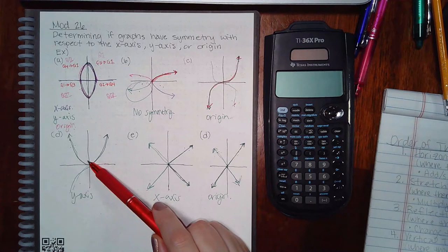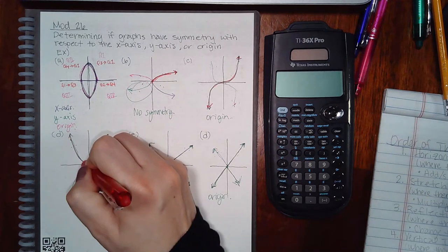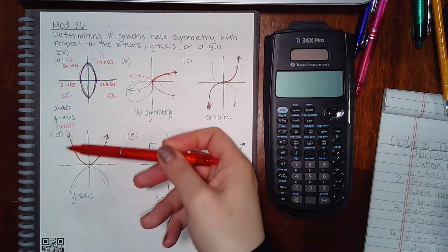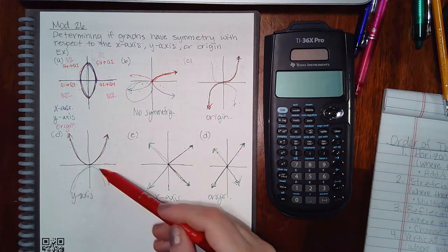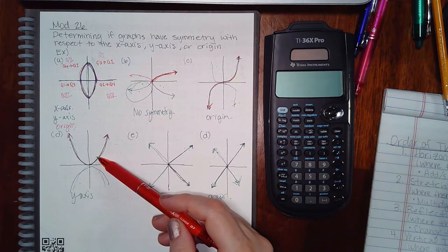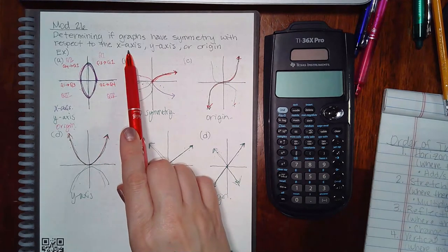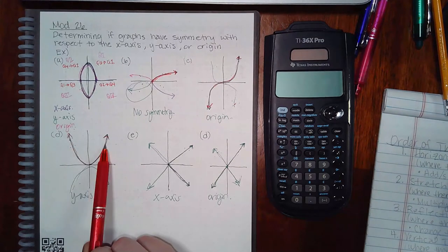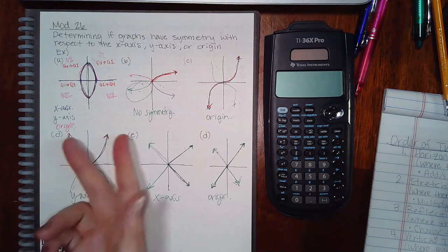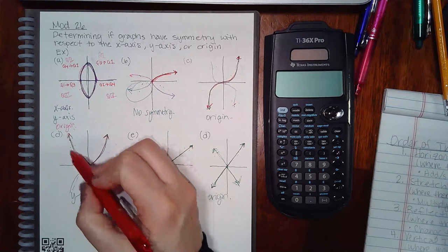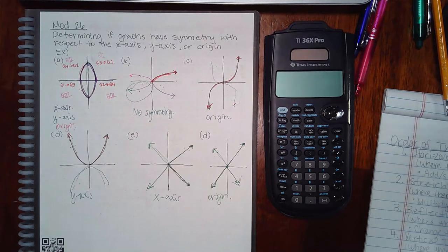For this parabola, this was the original graph. If I flip it over the x-axis it ends up becoming a downward curve, which does not land on the original graph, so it does not have symmetry with respect to the x-axis. If I flip it over the y-axis, it does land on itself — the right-hand side lands on the left side and vice versa — so it does have symmetry with respect to the y-axis.